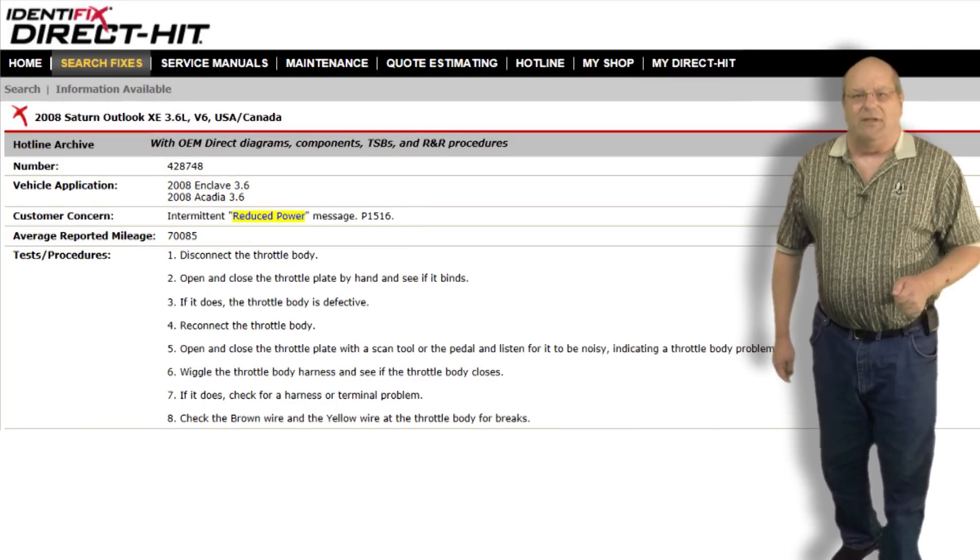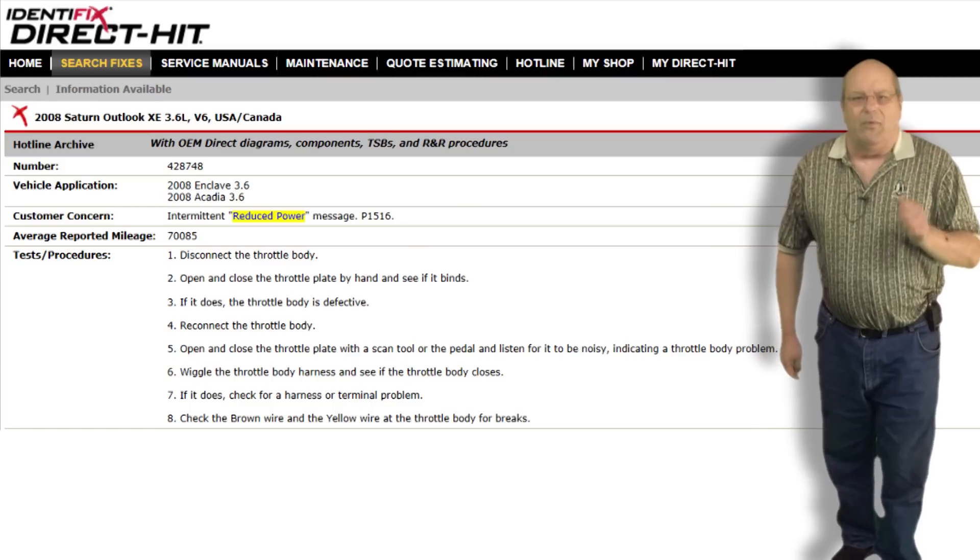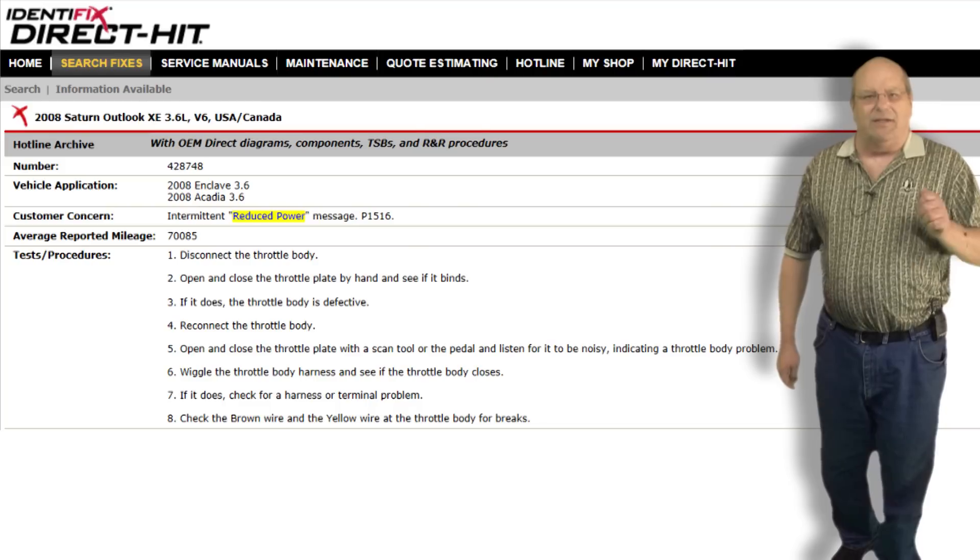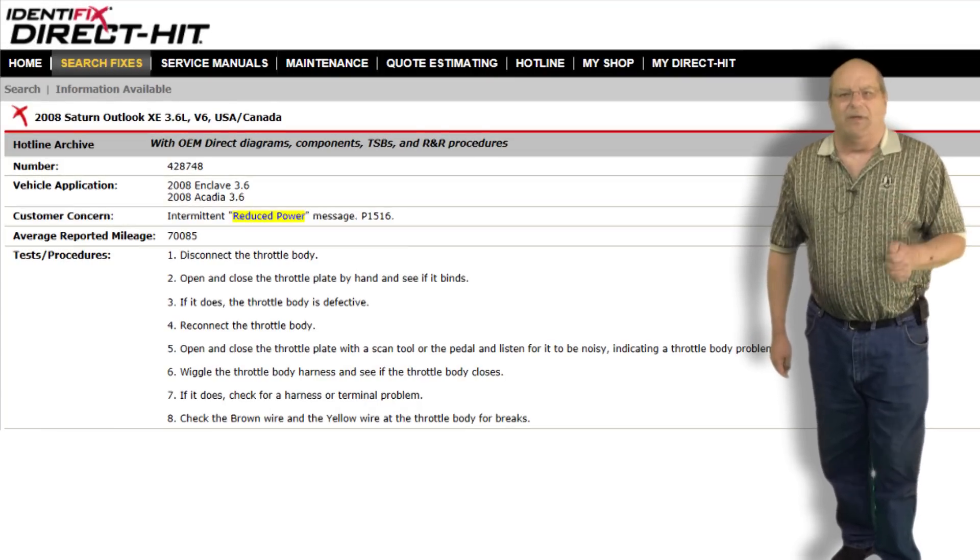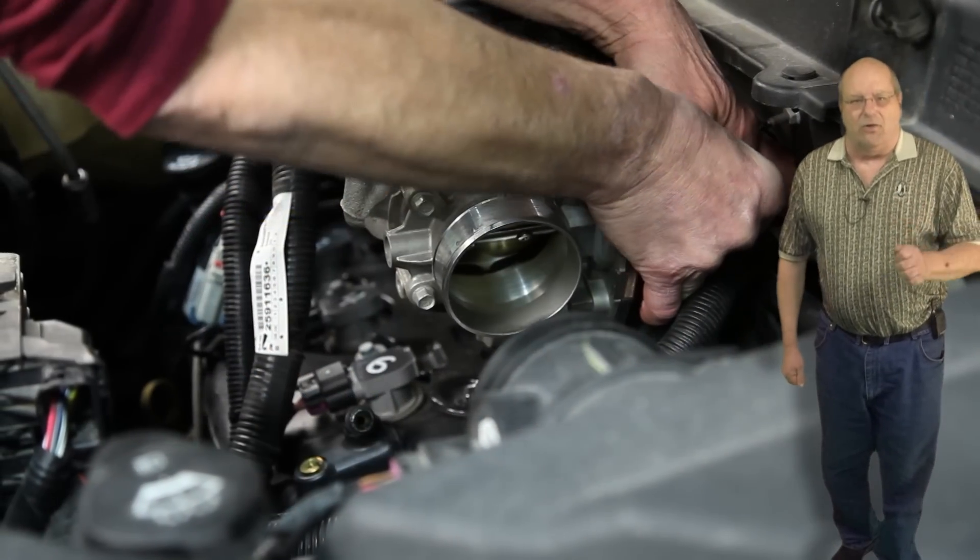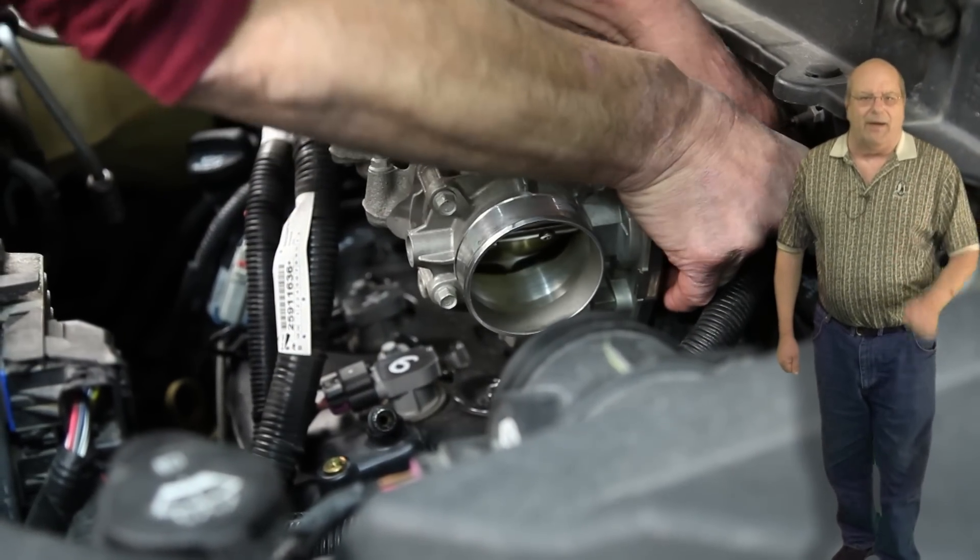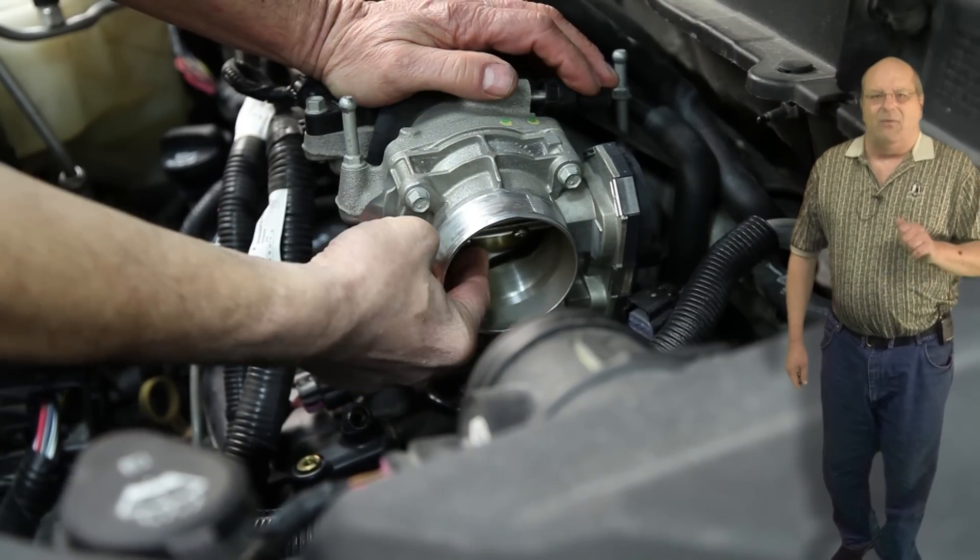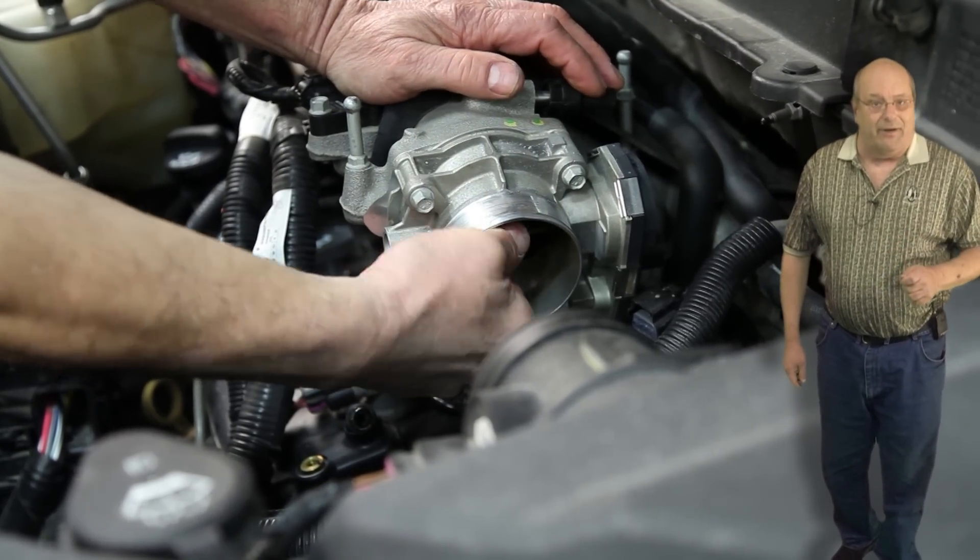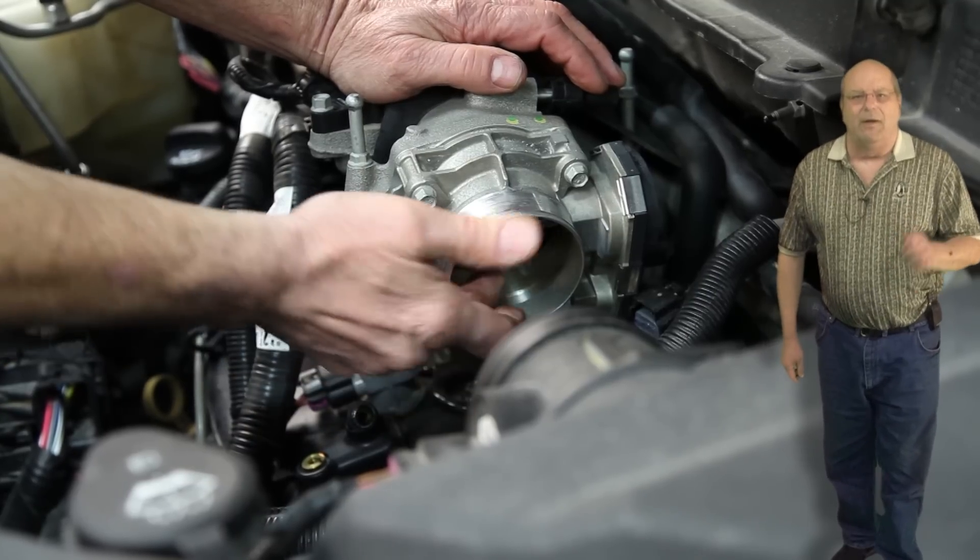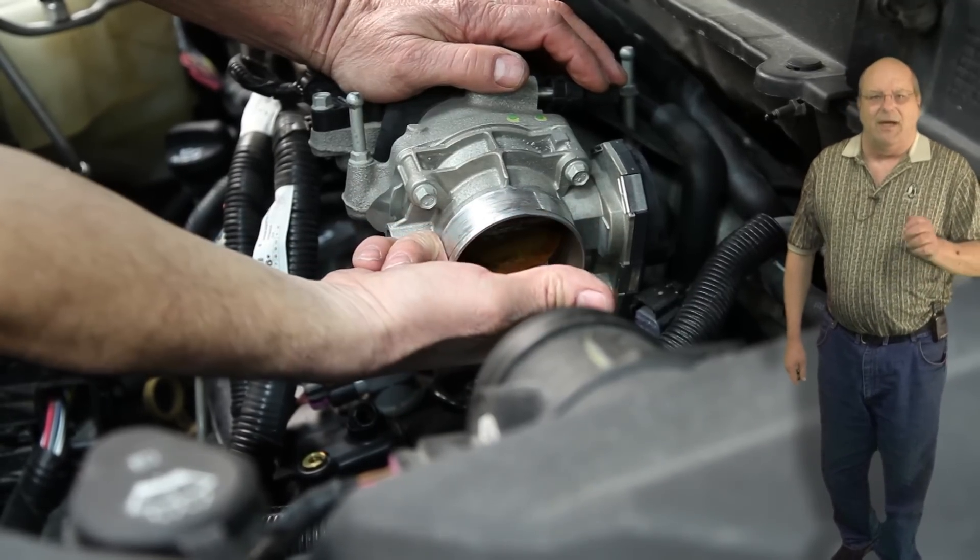The first step was to disconnect the throttle body and move the throttle plate with one hand. The reason the directions say to disconnect the throttle body is because you do not want to press on the throttle plate until you are sure there is no current being supplied to the throttle body. If the throttle plate was activated while your finger was on the plate it could sever your finger. Be sure there is no power going to the throttle body before you test for resistance on the throttle plate.